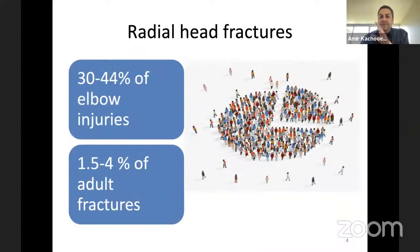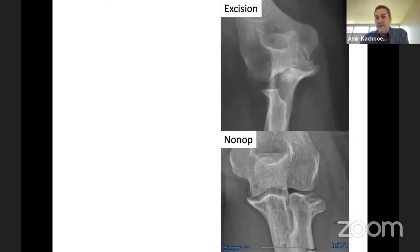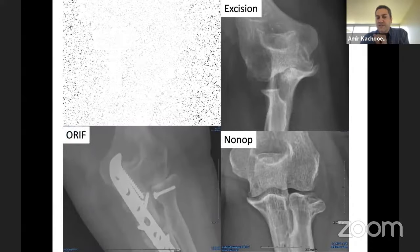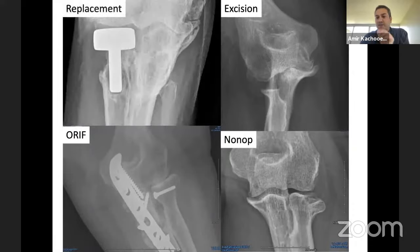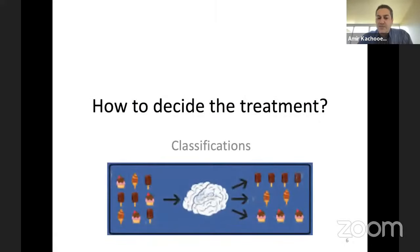Radial head fractures account for about 30 to 44% of elbow injuries and 1.5 to 4% of adult fractures. There are multiple treatments for radial head fractures, which can be classified into four types: non-operative treatment, excision of the radial head, ORIF or internal fixation, and replacement. So we have these four categories of radial head fracture treatments. The question is how to decide which treatment is the appropriate one.